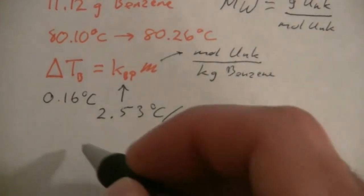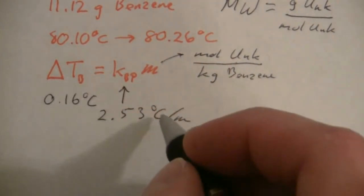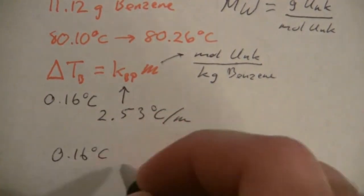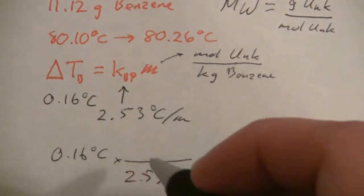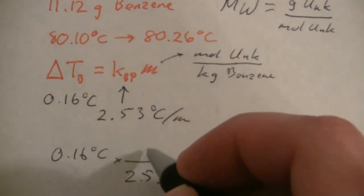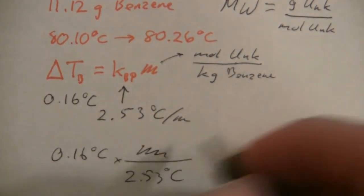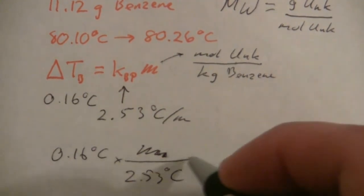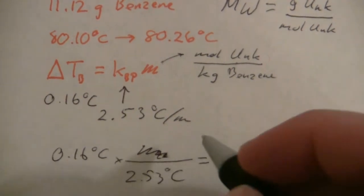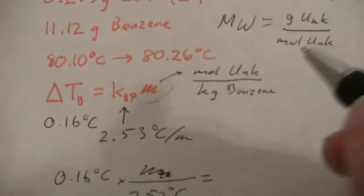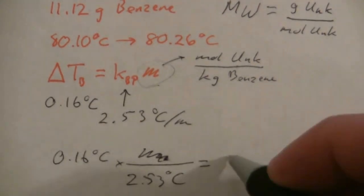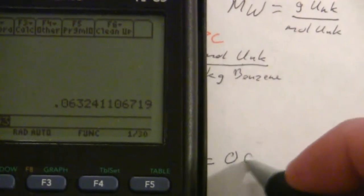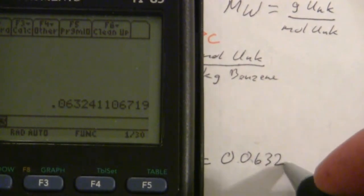Let's work this problem through. We have the change in temperature divided by the molal boiling point constant, 2.53 degrees C per molal, and this will give me the molality. So I will have 0.16 divided by 2.53 and I get 0.0632 moles of the unknown per kilogram of benzene.